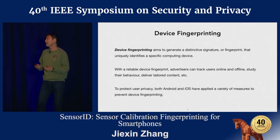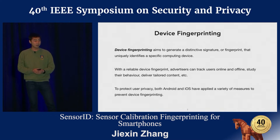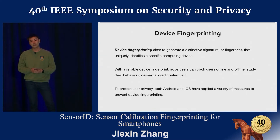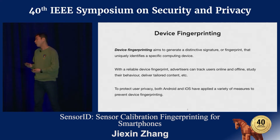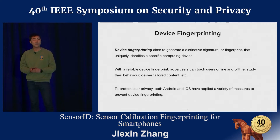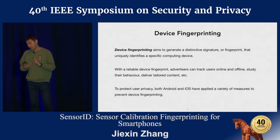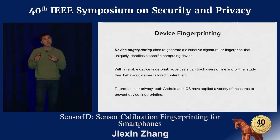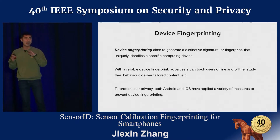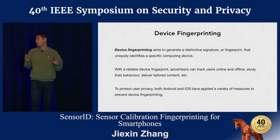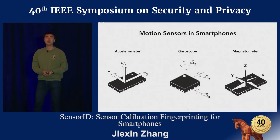To protect against device fingerprinting, both iOS and Android have deployed a set of countermeasures. For example, on iOS, developers have no access to a phone number or the MAC address of the hardware modules, while on Android, this is enforced by permission-based access control. Nevertheless, there is a major piece that has been neglected in the countermeasures, and that is the motion sensors.